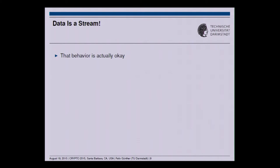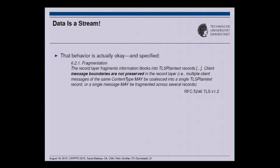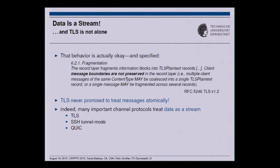This might sound strange, but it's actually behavior that's OK because the data sent is a stream — and that's what is specified even in the TLS RFC. If you go there and look at the fragmentation specification, it says that message boundaries are not preserved within TLS records or TLS ciphertext. This means either two messages might go into one record, or a single message might be split into several ciphertexts. TLS never promises to treat messages atomically. TLS is not alone: SSH in tunnel mode and the QUIC protocol proposed by Google also treat data in a stream-based manner.